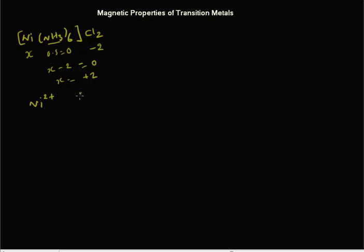Since the oxidation state of nickel is 2+, let's write the electron configuration of a neutral nickel atom. The condensed electron configuration of nickel is 3d⁸ 4s². Since it's Ni²⁺, those two electrons will be lost, so the condensed electron configuration for Ni²⁺ would be 3d⁸.